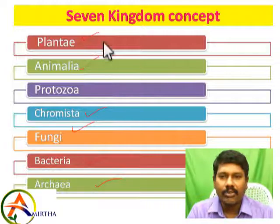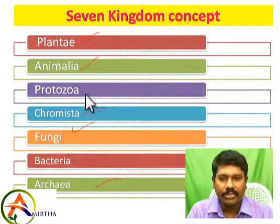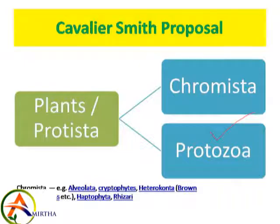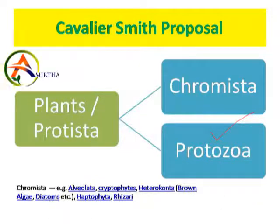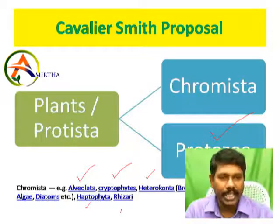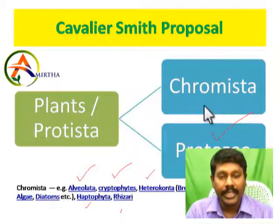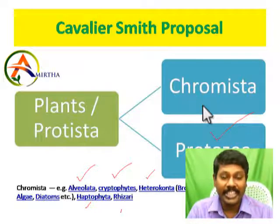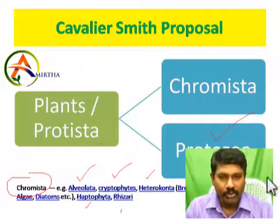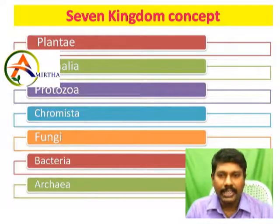So here you can see the emergence of the seventh kingdom, called Chromista. Plantae and Animalia remain as usual. Protista is still a kingdom. Chromista is a new separate kingdom — non-photosynthetic Protista is in the Chromista group. So Protista plus Chromista replaces the old Protista, giving us seven kingdoms.